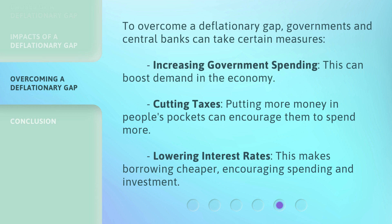To overcome a deflationary gap, governments and central banks can take certain measures. Increasing government spending can boost demand in the economy. Cutting taxes, putting more money in people's pockets, can encourage them to spend more. Lowering interest rates makes borrowing cheaper, encouraging spending and investment.